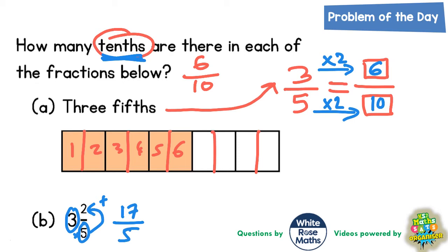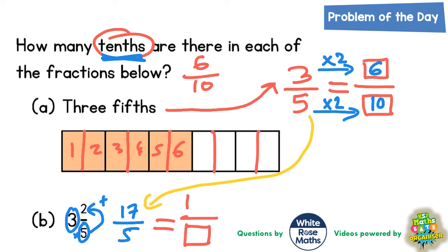Now we can use the same strategy as before. We know it's 17 fifths, and we need to make an equivalent fraction and turn that into tenths. Pop an equal sign next door with a box for the denominator and a box for the numerator. To get from 5 to 10 is times 2, so 17 times 2 would be 34. That's 34 tenths.